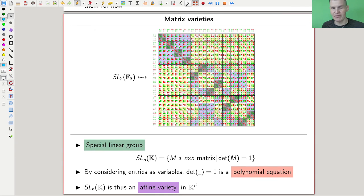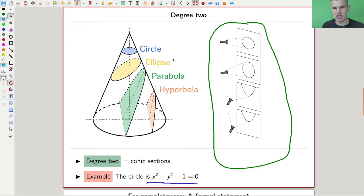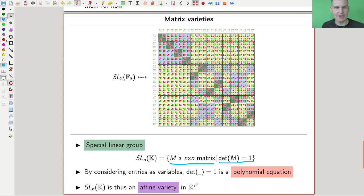There are a lot of affine varieties. The magic of algebraic geometry is that there will be a machinery where you can talk about very different objects using just the idea of zero sets of polynomials. Here's one that doesn't immediately come to mind: matrix varieties. SL_n(K), which are n by n matrices with values in K and determinant one, called special linear.